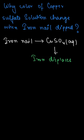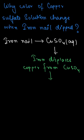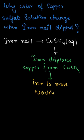The iron displaces the copper from the copper sulfate. This happens because iron is more reactive than copper. That is why there is a color change observed in the solution.